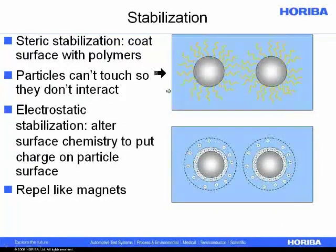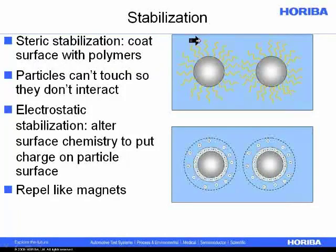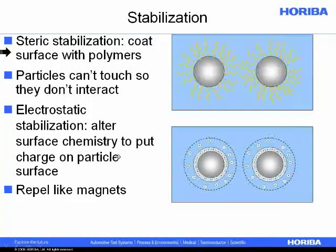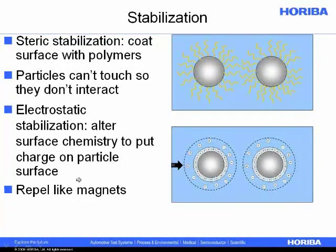There are two basic ways to do stabilization of dispersions. The first is to add a polymer to the surface — these squiggly lines represent polymers added to the surface. If we add polymer to the surface of the particles, they can't interact, and we call that steric stabilization. Another route is to add a charge onto the surface of the particles so they repel like magnets — this way they don't interact, don't start sedimenting or aggregating, and we can make a more stable dispersion. We call this approach electrostatic stabilization.